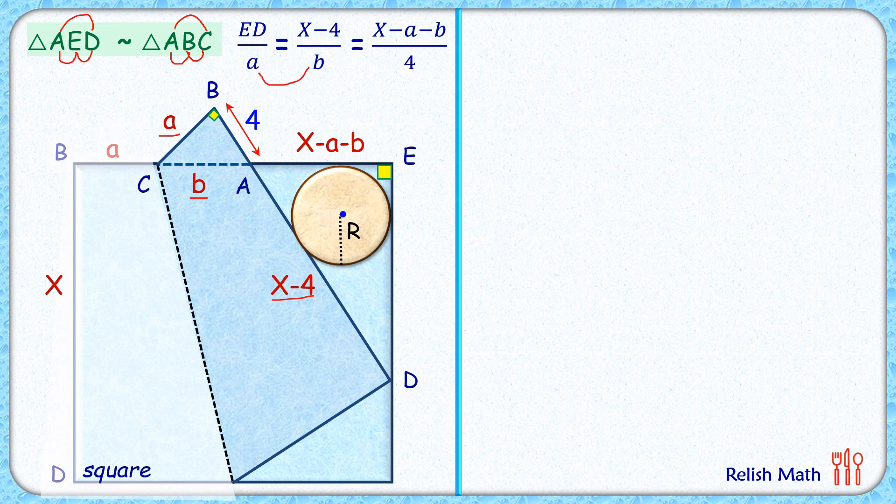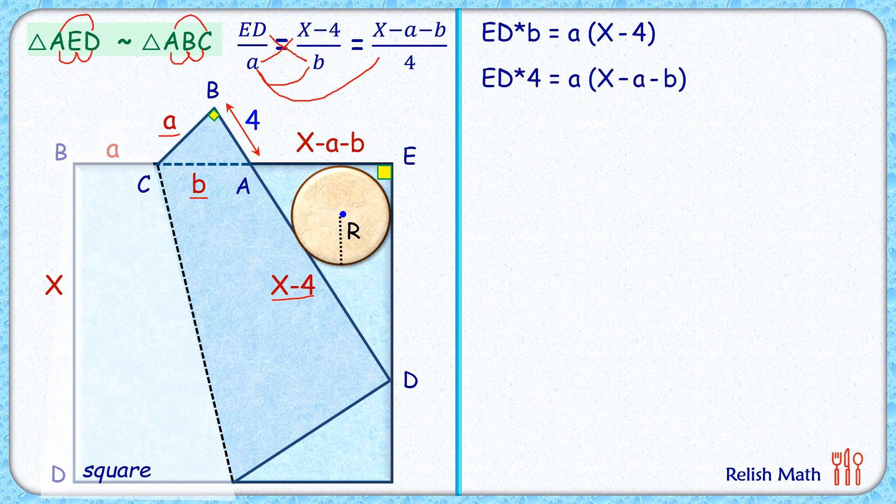Let's solve the first pair. Doing cross multiplication, we'll get ED times b equals a times (x - 4). Second, we'll solve these two equations together. We'll get ED times 4 equals a times (x - a - b).